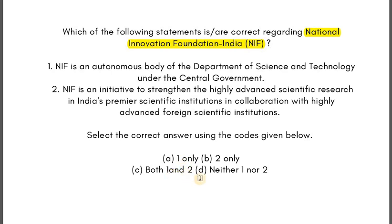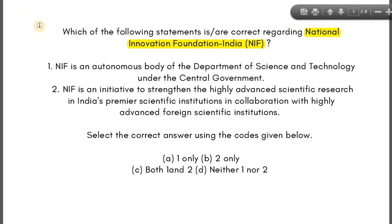The options are one only, two only, both, or none. Statement one is correct — we just need to know or guess this. For statement two, even the examiner seems to be hinting here: it says 'highly advanced scientific research' and 'highly advanced foreign scientific institutions.' This doesn't sound convincing — a foundation for innovation would generally focus on the traditional or grassroot level of scientific innovation, not highly advanced foreign collaboration.